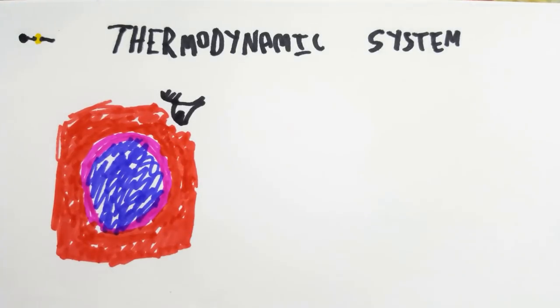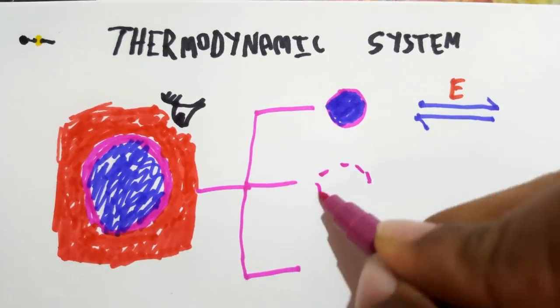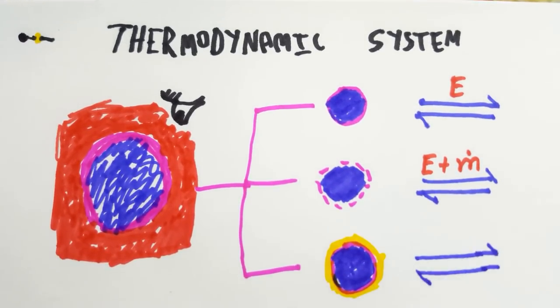First, closed system where only energy transfer takes place. Second, open system where both energy and mass transfer takes place. Third, isolated system where no transfer takes place.